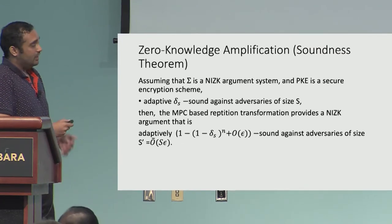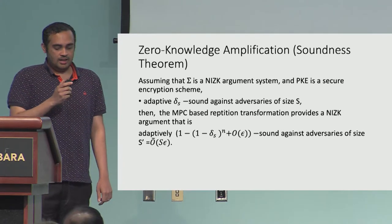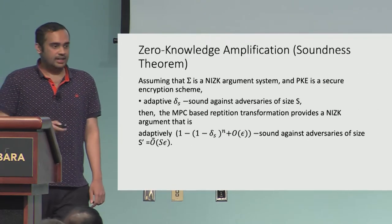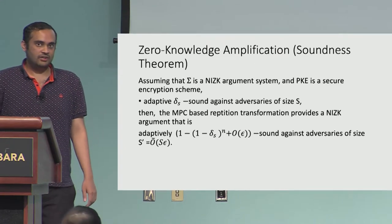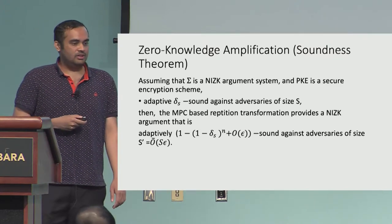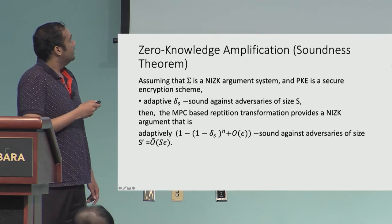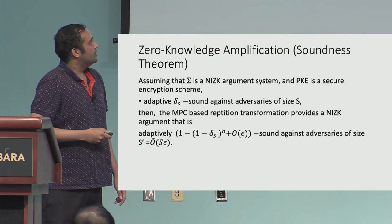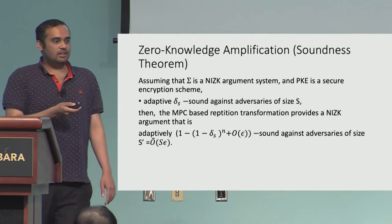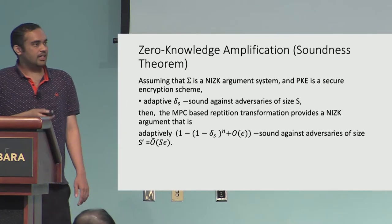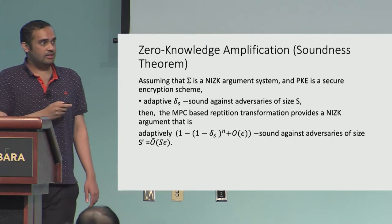For zero knowledge amplification, we can prove the following about soundness — it is not completely killed. Suppose we have a δS-sound argument system against adversaries of size S. When you use this transformation, you get soundness 1 minus (1 minus δS)^N plus O(ε), against an adversary of slightly smaller size S·ε. We started with δS and expect 1 minus (1 minus δS)^N, but we get an additive term that also factors in the reduction of the adversary size.